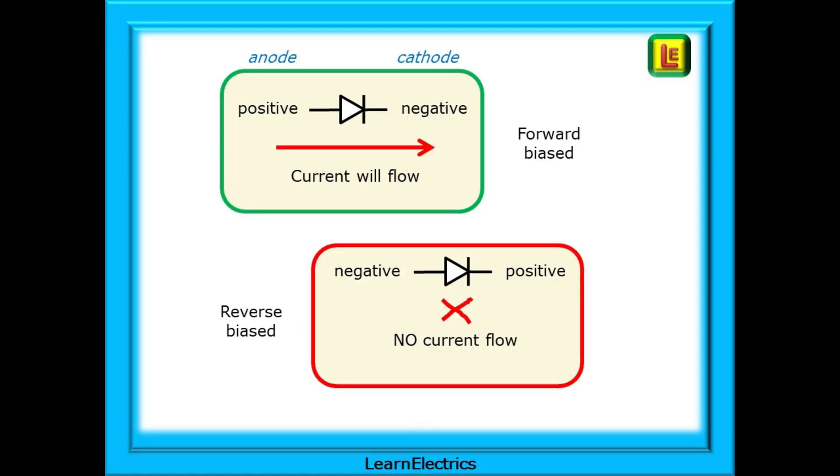If the anode is more positive than the cathode, then current will flow through the diode, just like a tap being turned on, and we call this forward biased.